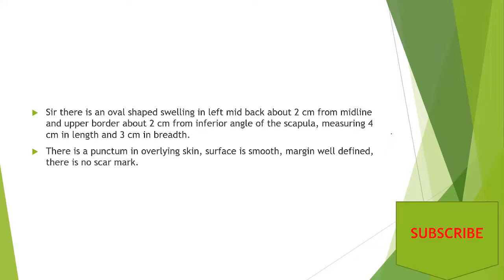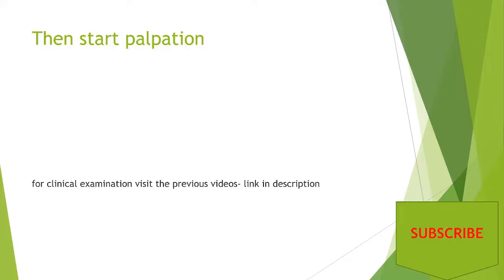After completing inspection, you can describe the swelling as a running commentary while examining, or describe after completion. For example: there is an oval-shaped swelling in the left mid-back, about two centimeters from the midline, upper border about two centimeters from the inferior angle of the scapula, measuring about four centimeters in length and three centimeters in breadth - oval, so length is more than breadth. There is a punctum in the overlying skin, the surface is smooth, margin is well-defined, and there is no scar mark, no visible vein or impulse.